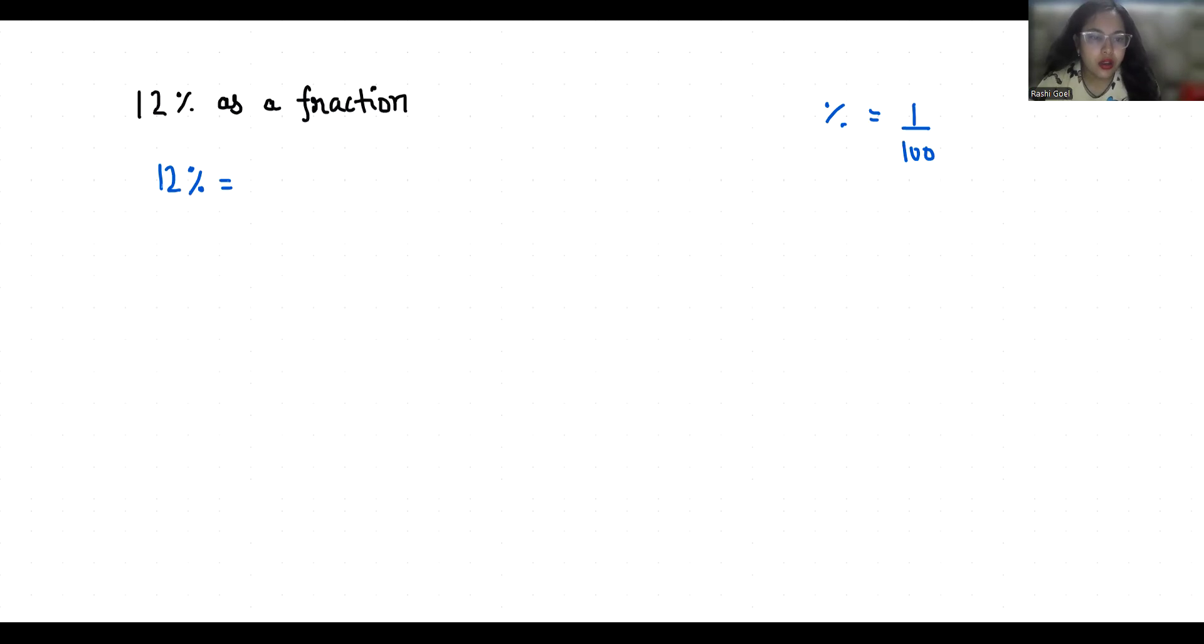So if we are talking about 12%, we can remove this percent sign and write 1 by 100. So 12 times 1 by 100 is 12 by 100.